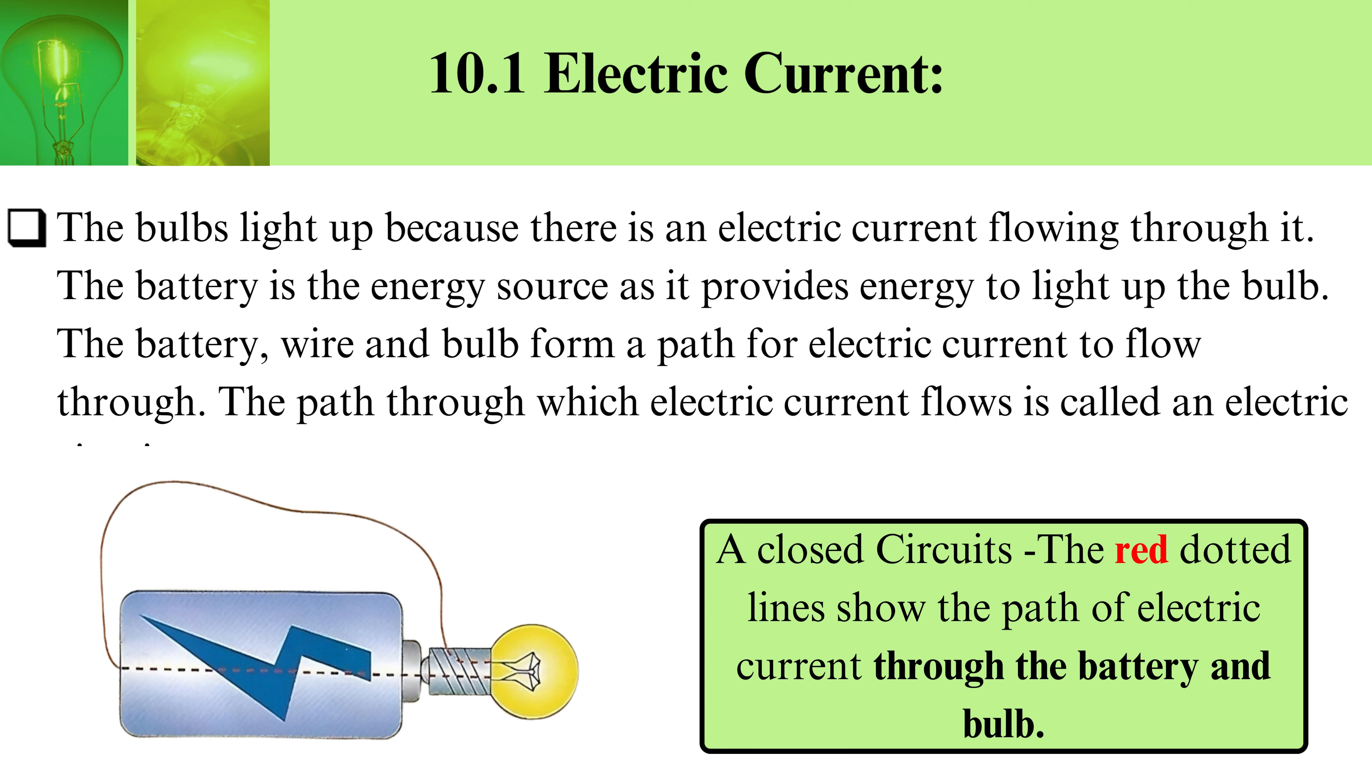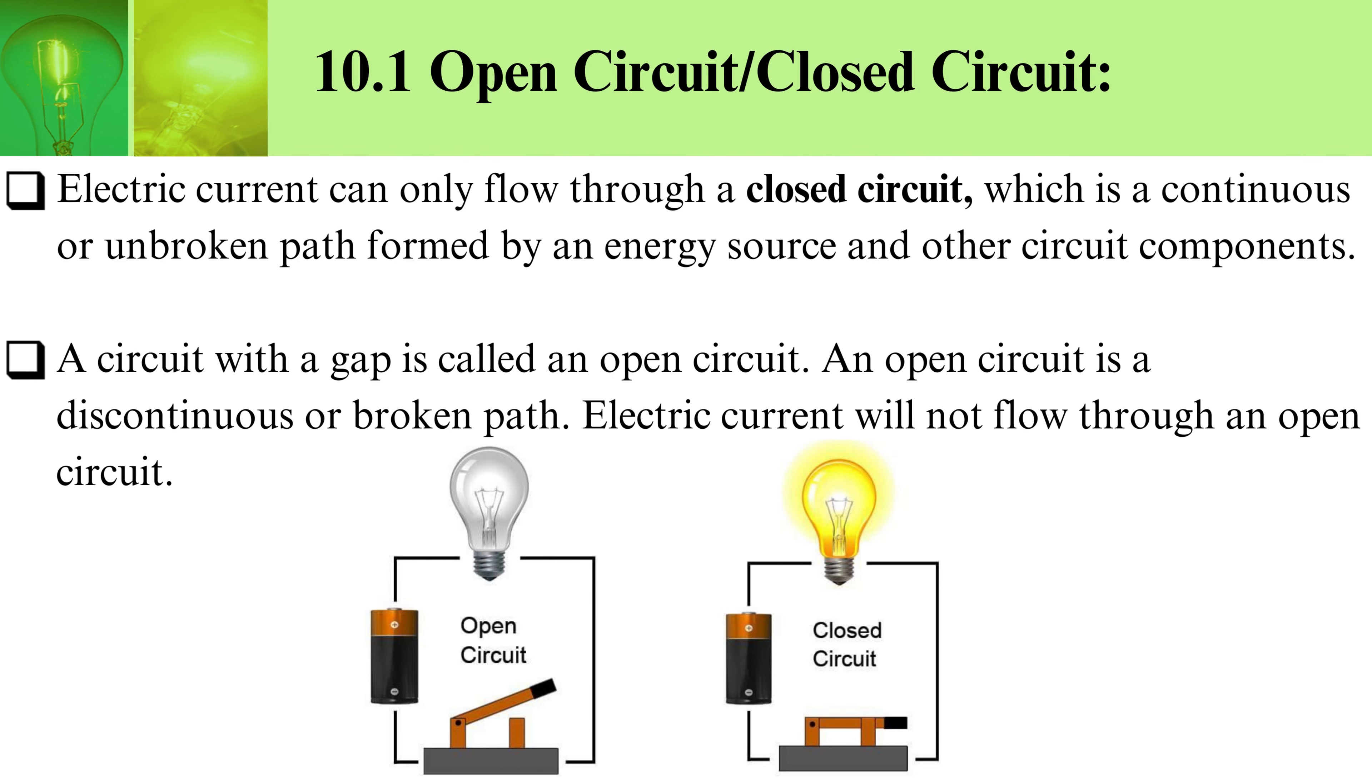The path through which electric current flows is called an electric circuit. A closed circuit: The red dotted lines show the path of electric current through the battery and the bulb.